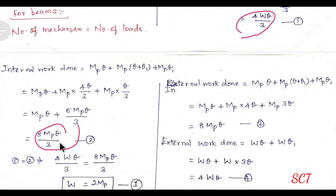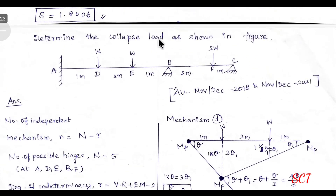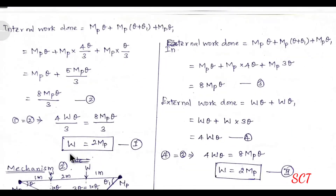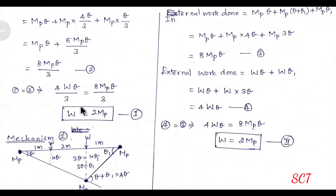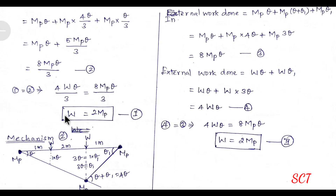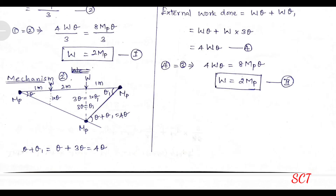We need to equate the first and second equations to determine the collapse load W. So: 4W theta by 3 equals 8 MP theta by 3. Cancelling 4 and 8 gives 2; theta cancels; 3 cancels. Remaining: W equals 2Mp. This is the first mechanism answer.